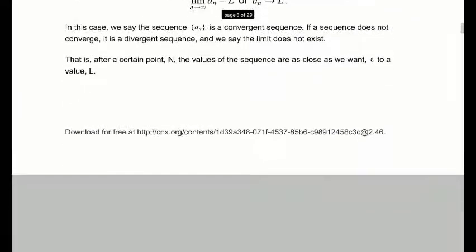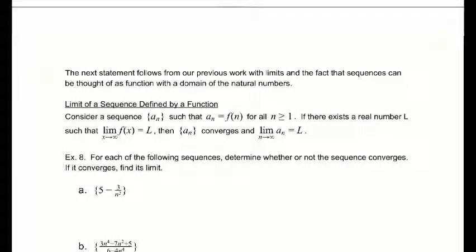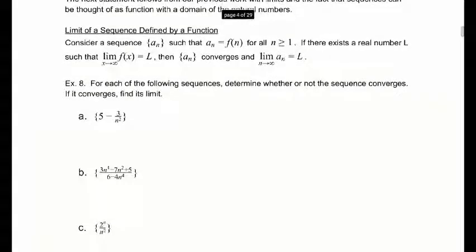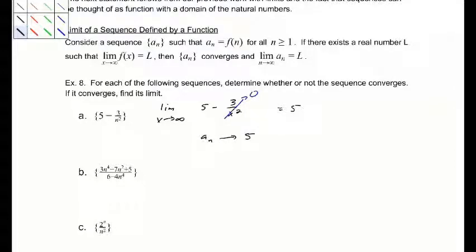Since sequences are functions with a domain of the natural numbers, we can use things from limits. If we can find a function with the same values as our sequence, we can use our limit properties. For example, the limit as x goes to infinity of 5 minus 3 over x squared: the second term goes to 0, so the limit is 5, which means a sub n converges to 5.